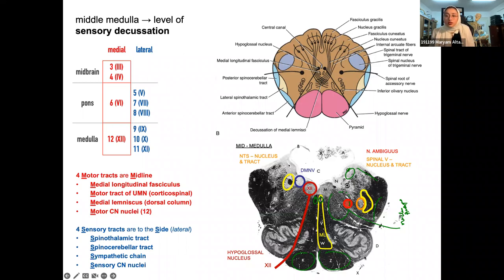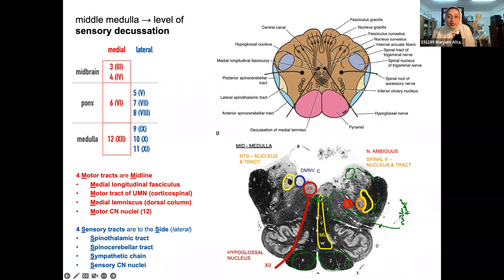Regarding the MLF location: if Dr. Yaqeen ad-Deen told you that the U shape represents the MLF, then that's the reference to follow. What happens at the lower medulla is the pyramidal decussation of the corticospinal tracts; what happens in the middle medulla is the sensory decussation of the medial lemniscus.